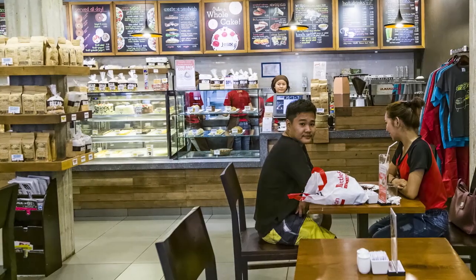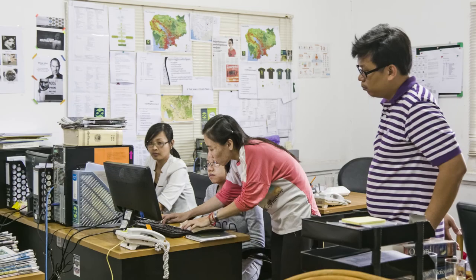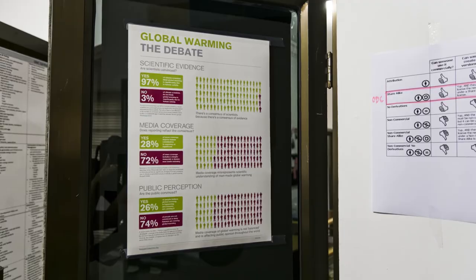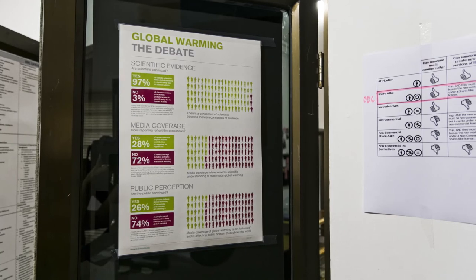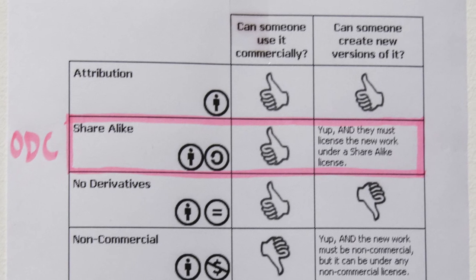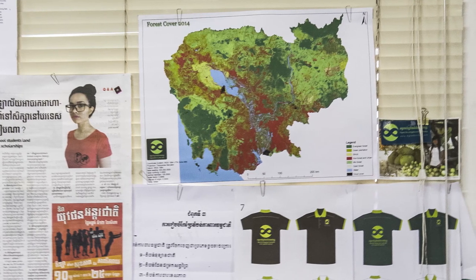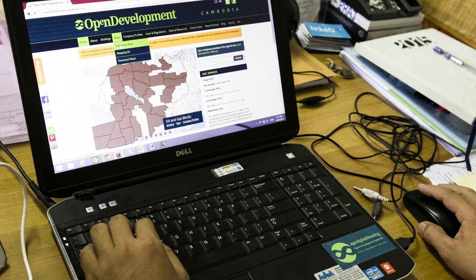Cambodian society is changing rapidly and both its economy and foreign investments are growing. This is why ODC believes that today, openness and transparency are paramount. If we talk about development, we talk about information and data that could support the development process, so that stakeholders can access data freely and understand what is going on. Then they can get involved, participate in the process, and make decisions. They can also make recommendations to policy makers or inform them about their concerns and their input to the development process. So open data is very helpful because without data available, there is no participation from stakeholders.